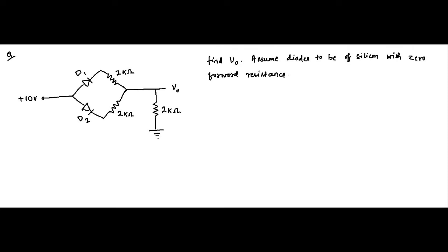Here we have another question on diode circuits. We are asked to find the voltage across this 2 kilo ohm load resistor. The information provided is that both D1 and D2 are silicon diodes with 0 forward resistance. This means the built-in potential will be 0.7 volt and forward resistance will be 0 ohm. We will replace the diode with its equivalent circuit — only the built-in potential.